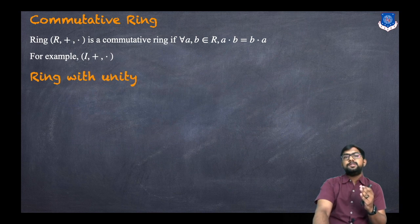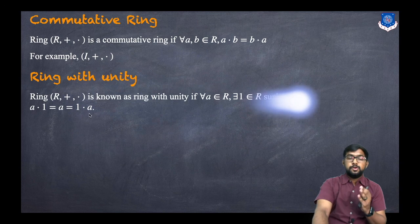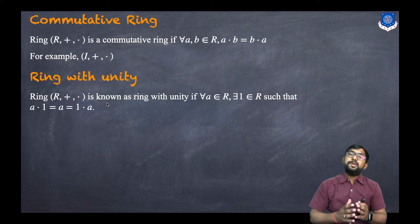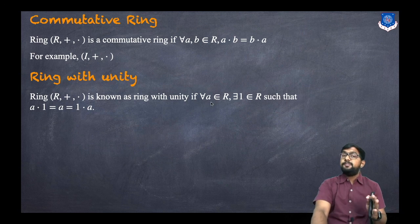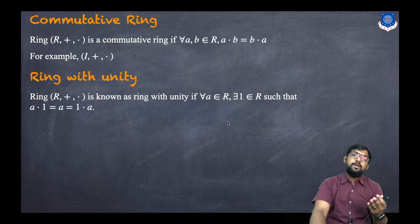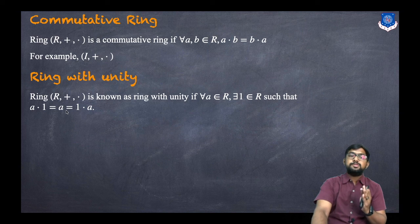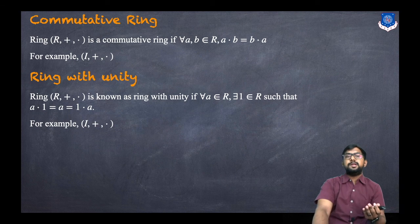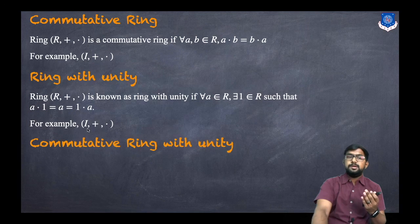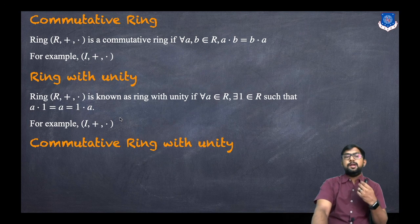What is a ring with unity? The ring (R, +, ·) is known as a ring with unity if for every A belonging to R, there exists 1 belonging to R such that A·1 = A = 1·A. For example, (ℤ, +, ·) is a ring with unity.